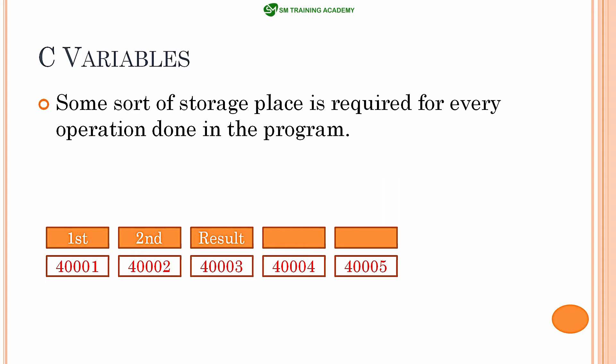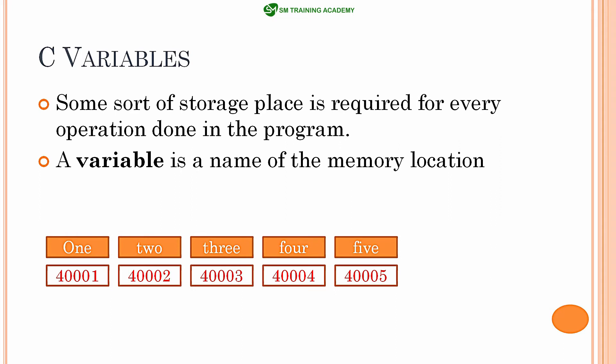This is where variables come into play. Variables are nothing but a name provided for a memory location. In a C program, we cannot use the memory locations available in the CPU directly by numbers like 4001, 4002, etc. Instead, we will assign a name for that particular memory location and then call the variable name for that particular memory.